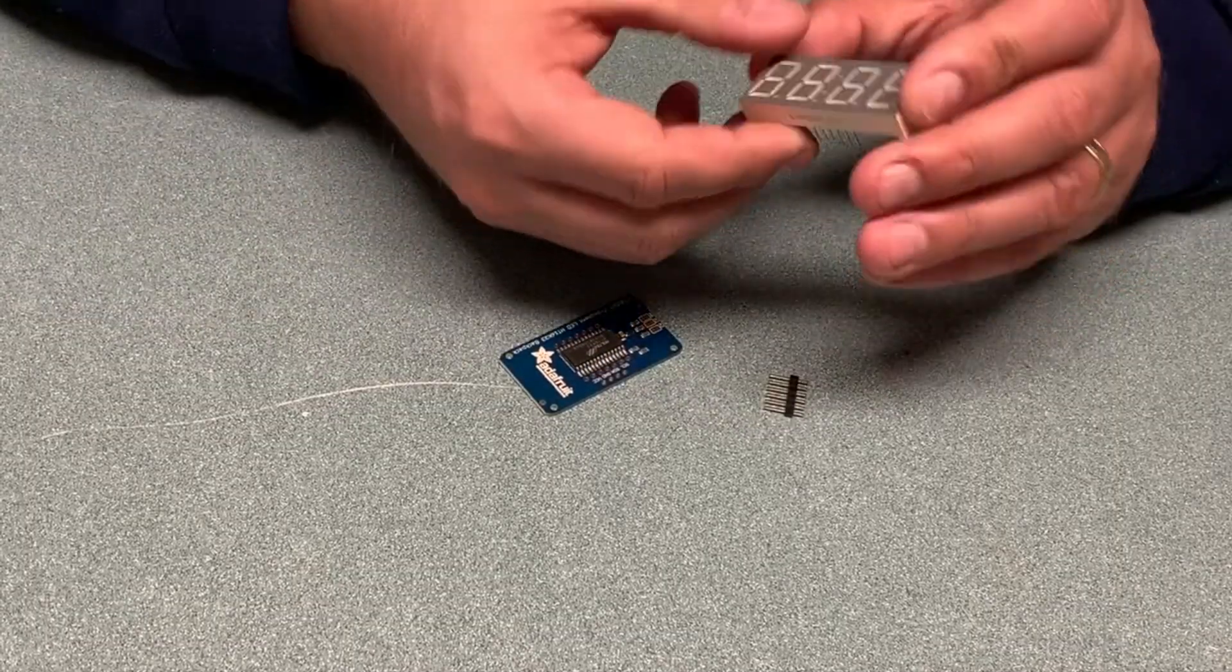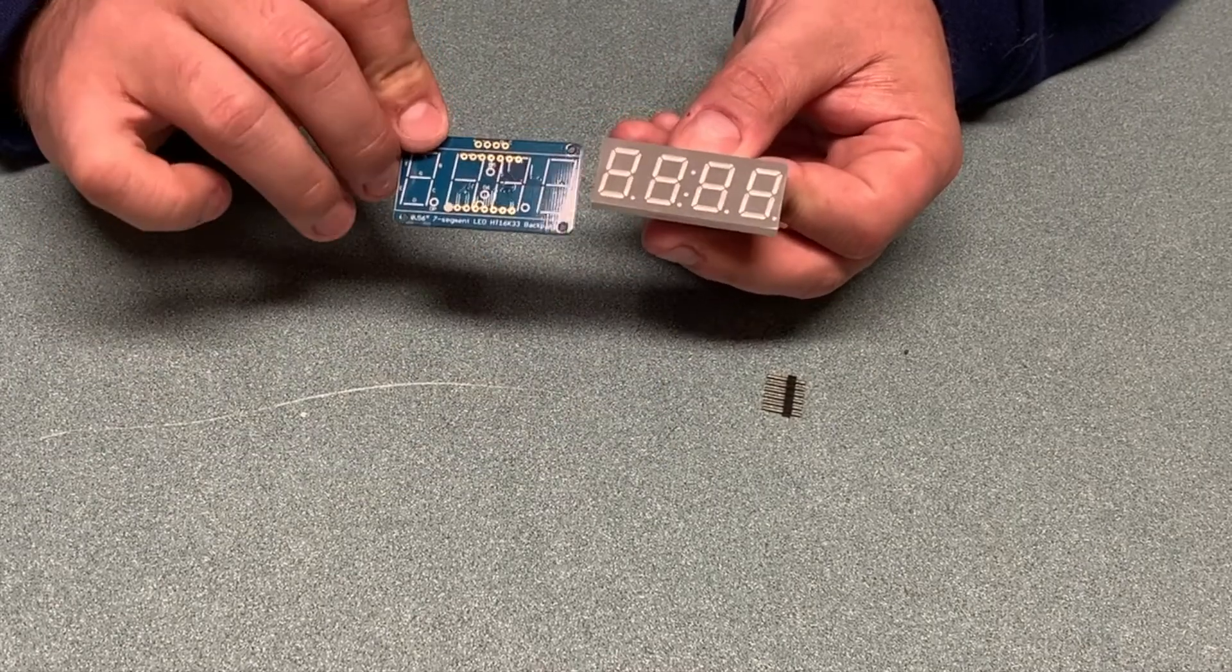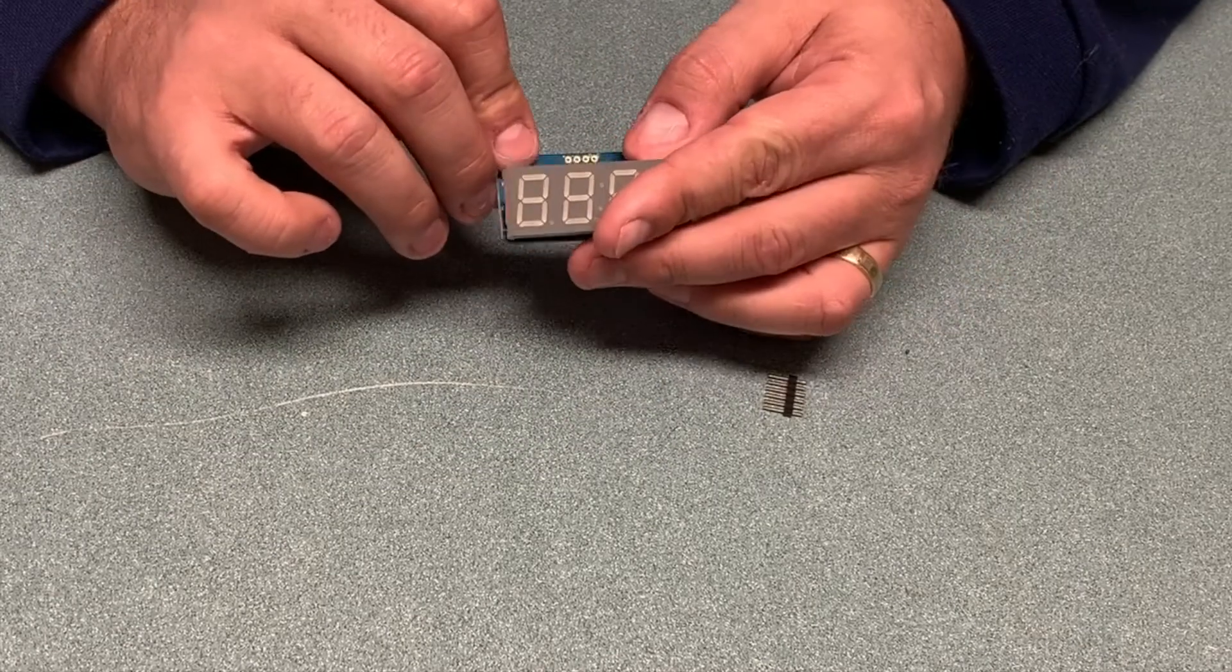Start out by lining up the display with the markings on the circuit board so that everything fits together and feeding the pins through the holes.